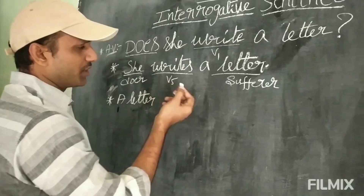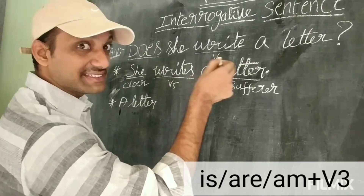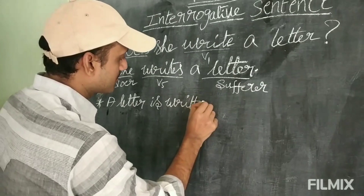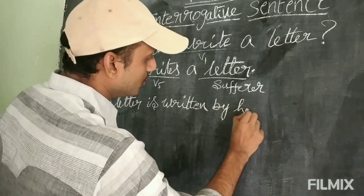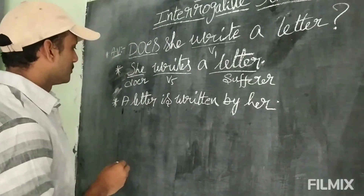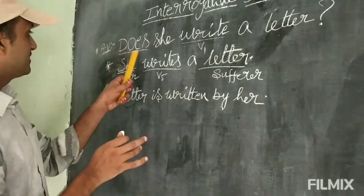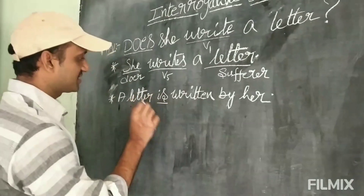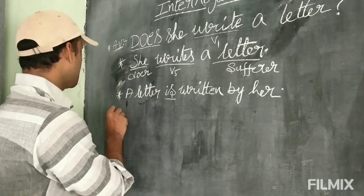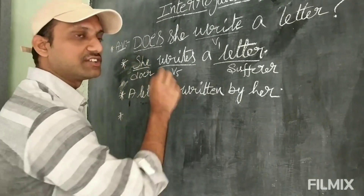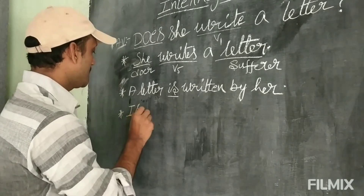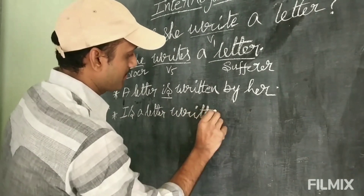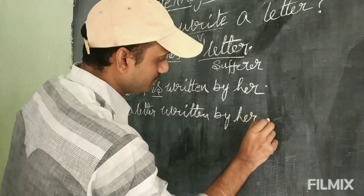The rule we have to follow is: Is/Are/Am plus V3. So 'a letter is written.' Then add 'by' — and 'she' changes to 'her.' Now, is this the answer? Since it is interrogative, we have to change this sentence into question form by placing the helping verb at the start. The passive form becomes: 'Is a letter written by her?'